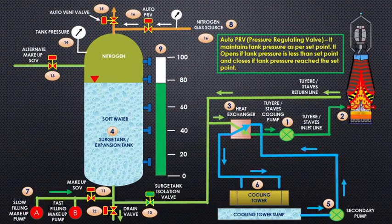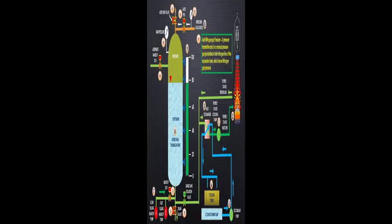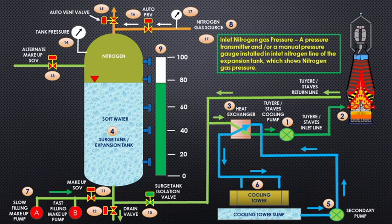Auto PRV (Pressure Regulating Valve) maintains tank pressure as per set point. It opens if tank pressure is less than set point and closes if tank pressure reaches the set point. Inlet nitrogen gas pressure: a pressure transmitter and/or manual pressure gauge installed in inlet nitrogen line of the expansion tank shows nitrogen gas pressure. Hope you understand. In case of any doubts, please mention in comments.